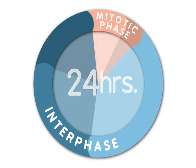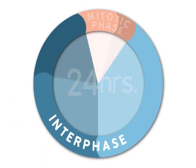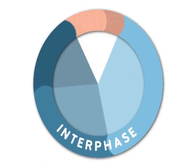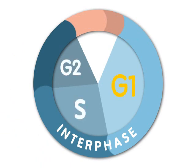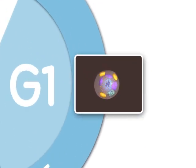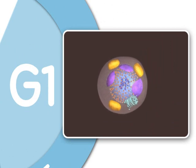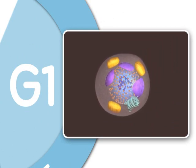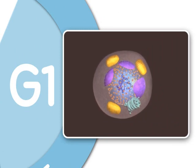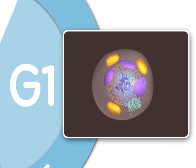Most of the life of a cell is spent in interphase. Interphase consists of three stages, called G1, S, and G2. G1, or Gap 1, is the first growth stage of interphase. In G1, the cell grows to nearly its full size and performs many of its specific biochemical functions that aid the organism.